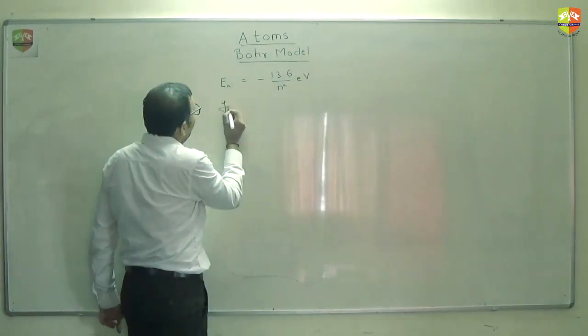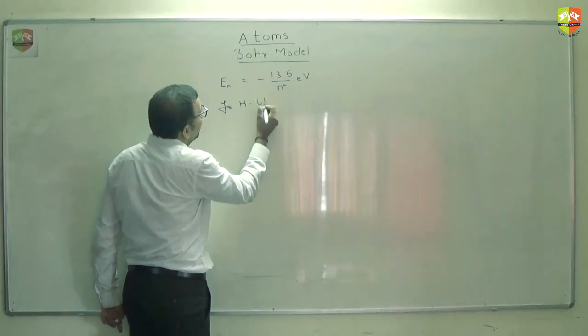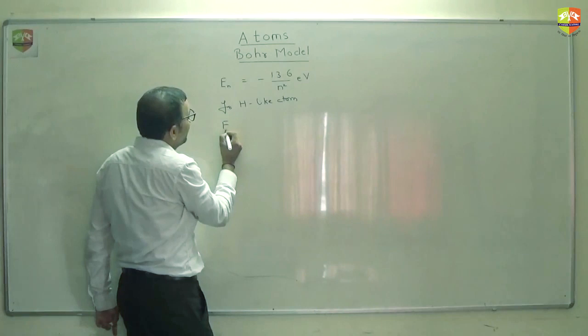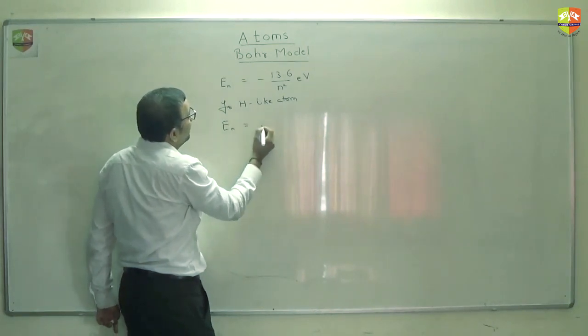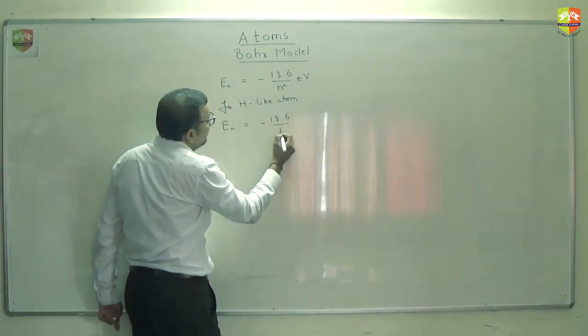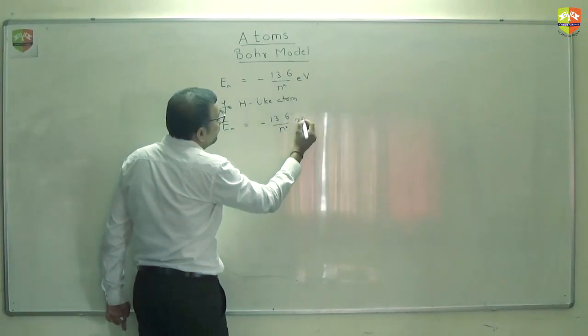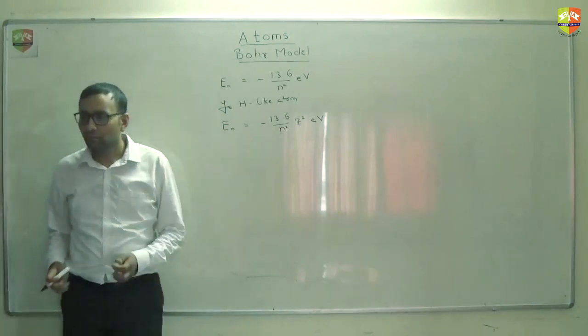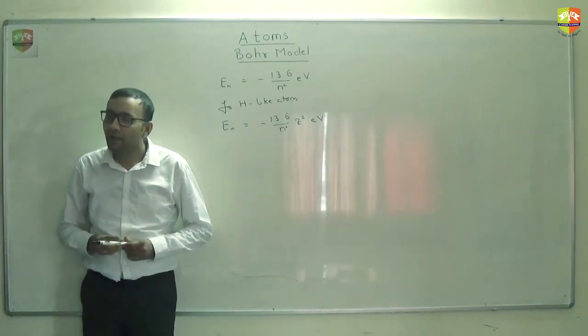This is for hydrogen atom, for hydrogen-like atom. Hydrogen-like atom has a single electron only. Energy in the nth orbit will be 13.6 by n square into z square electron volt, where z is the atomic number.